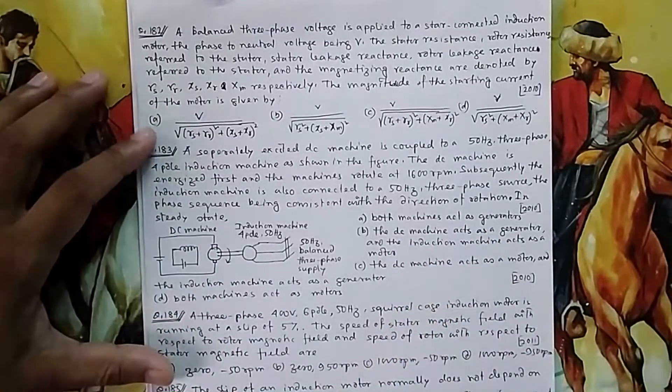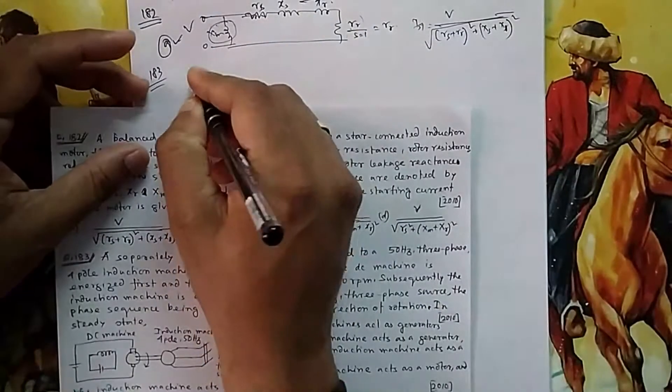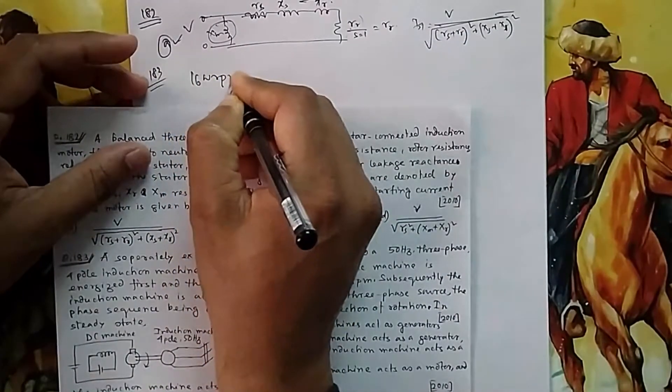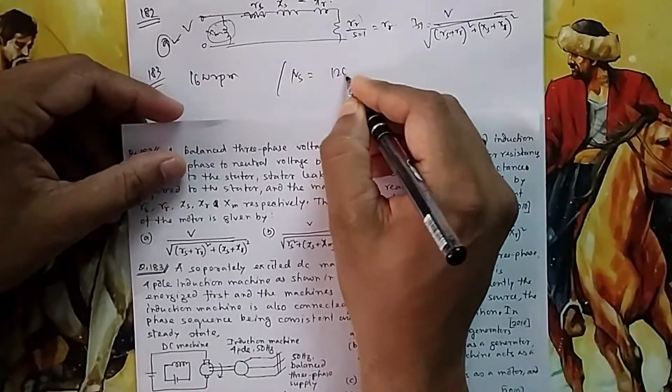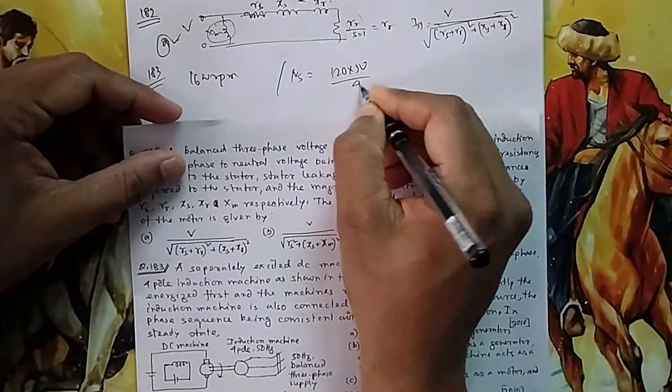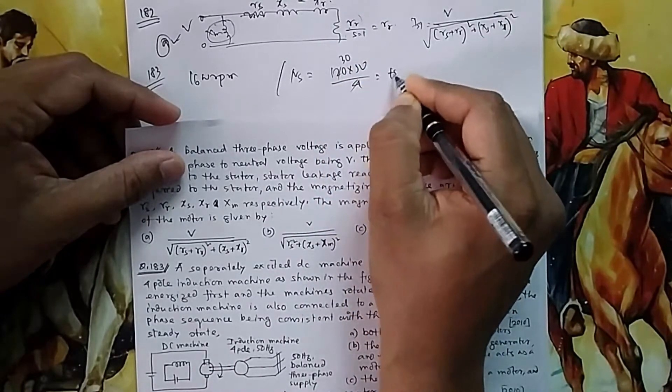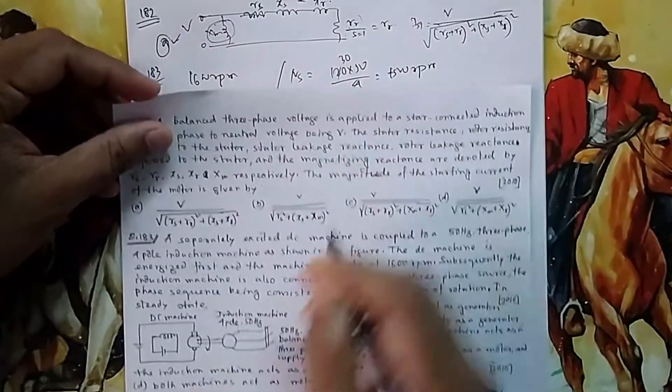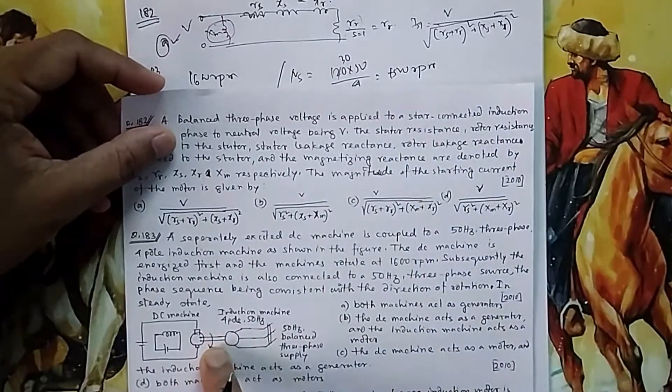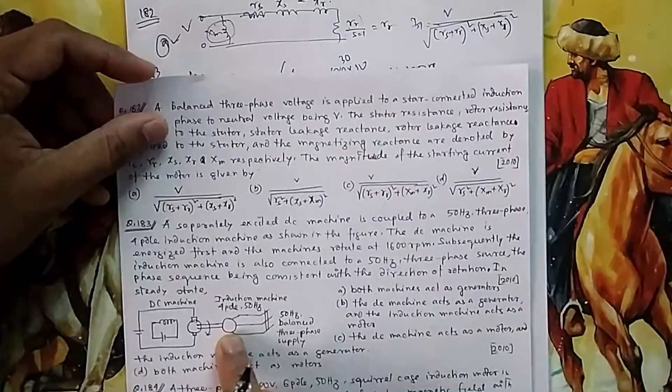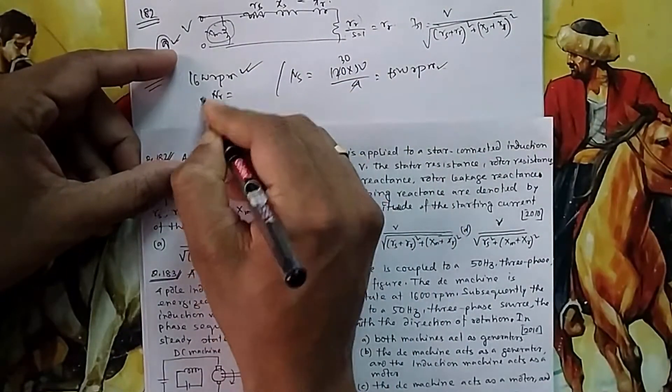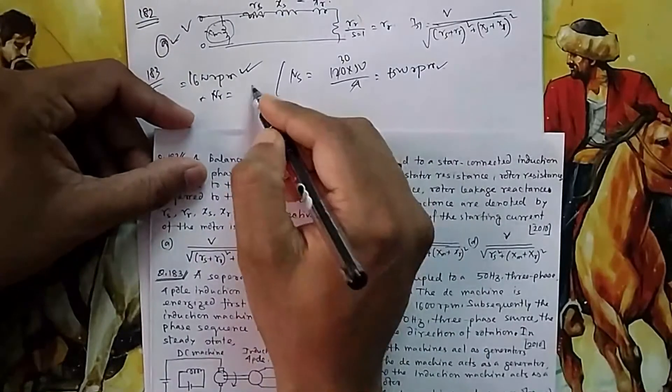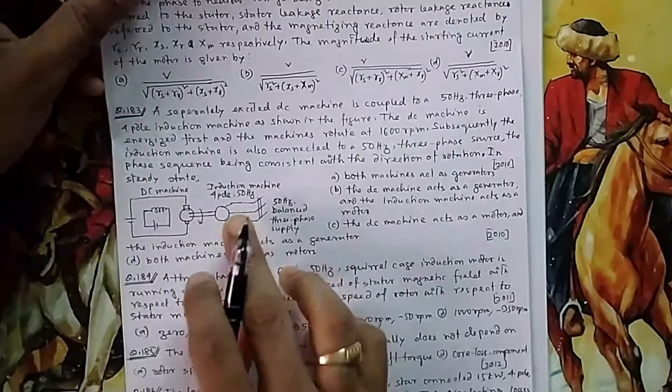The DC generator speed is 1600 RPM. Calculate NS in the induction machine: NS is 120 times 50 by 4, so it is 1500. Obviously, because they are mechanically coupled, the rotor speed of the induction motor is 1600 RPM, which is more than synchronous speed. So this machine will act like a generator.